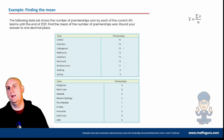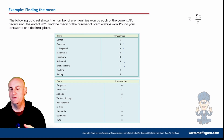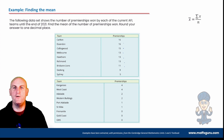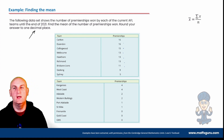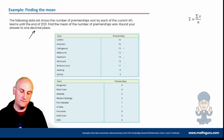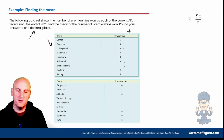Let's do an example finding the mean. The following dataset shows the number of premierships won by each of the current AFL teams up until the end of 2021. Find the mean of the number of premierships, and round your answer to one decimal place. In exams, time and time again examiners note that people do not round to the required decimal places — they get halfway through and just stop. Make sure you round appropriately, or they'll take the mark off.